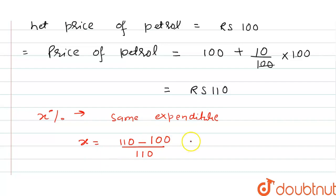Then x equals... After simplification, we get 10 upon 110 multiplied by 100. The zeros cancel out.